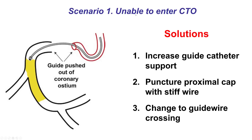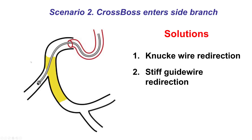The first scenario is that the CrossBoss cannot penetrate through the proximal cap, usually because of calcification or severe hardening. The solutions are to increase the guide catheter support, to puncture the proximal cap with a stiff wire, or to switch to a guide wire escalation technique.